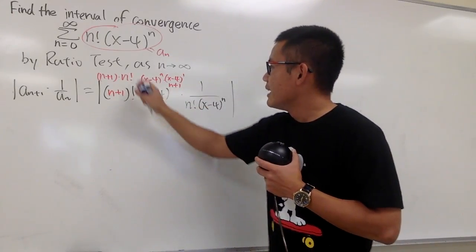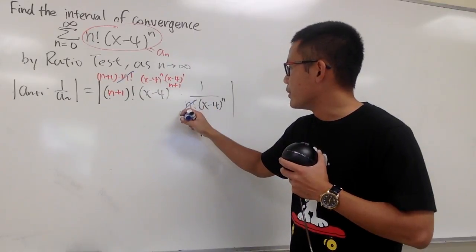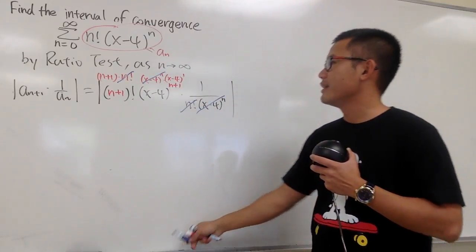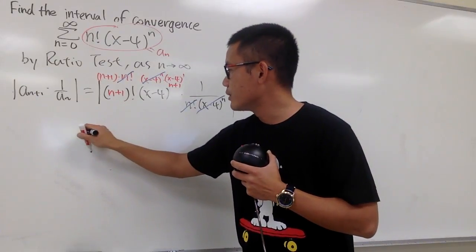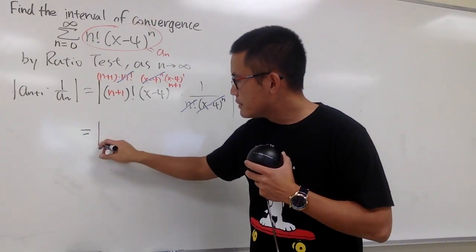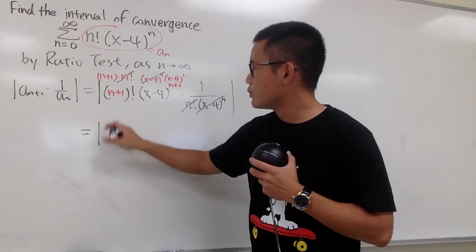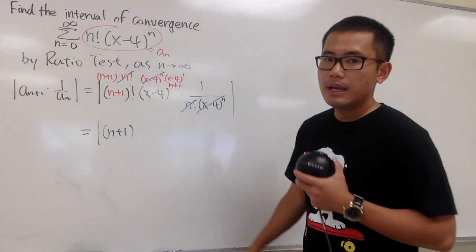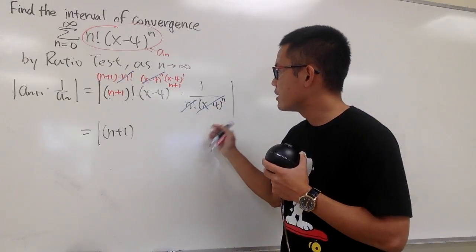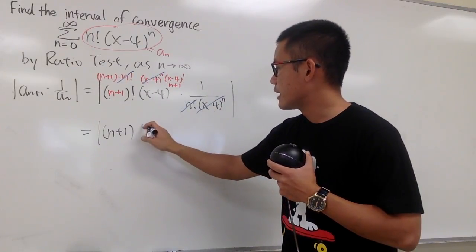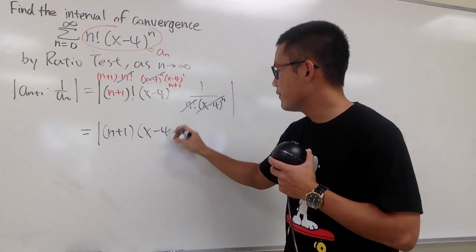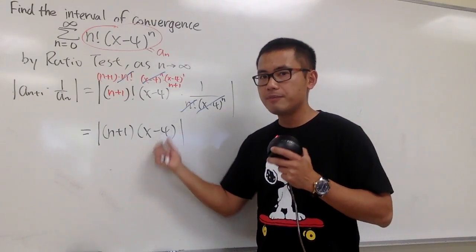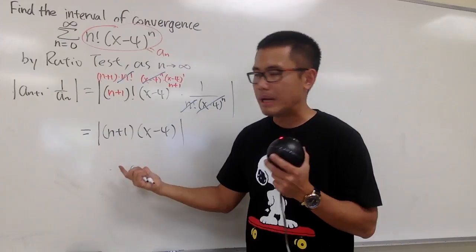Now, consolidation time. The n factorials cancel, and the (x-4) to the nth powers cancel. This is going to be still in absolute value. We have (n+1) in the numerator with no denominator, times (x-4). So this is what we have, both of them still technically in the absolute value.